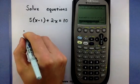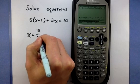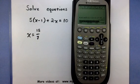So according to the calculator, it says x is equal to 15 over 7. And there's our answer, just like that.